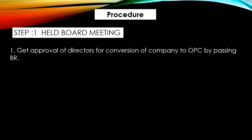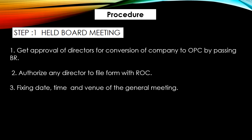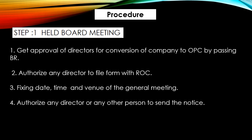Now let's start with the procedure. सबसे पहले board meeting conduct की जाएगी. उस board meeting में board resolution pass किया जाएगा for conversion of company into OPC. Then किसी director को authorize किया जाएगा to file forms with ROC. फिर उसके साथ ही date, time and venue decide किये जाएगे general meeting के, क्योंकि आपको special resolution pass करना है for the conversion. उसके बाद किसी director को authorize किया जाएगा कि वो notice send करेंगे for the general meeting, और जो भी notice draft किया जाएगा उसको उस board meeting में approve किया जाएगा.